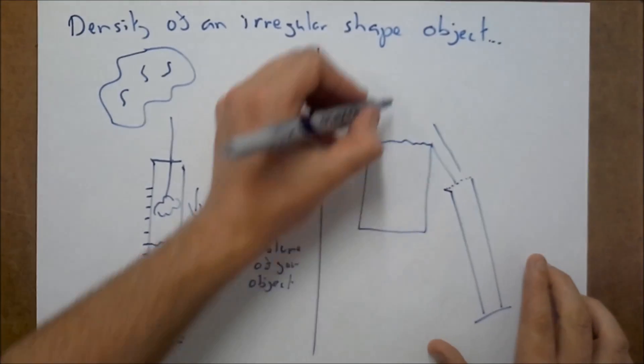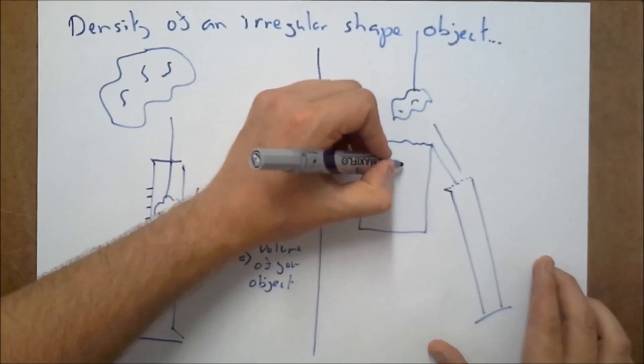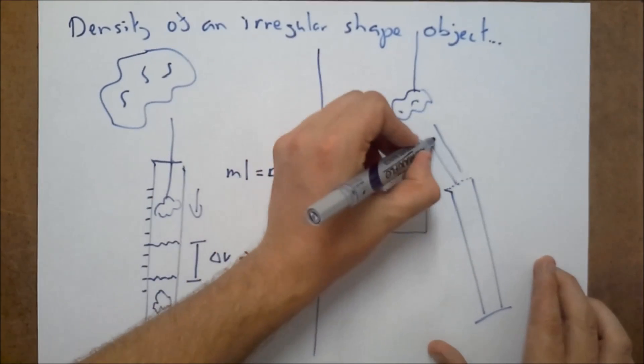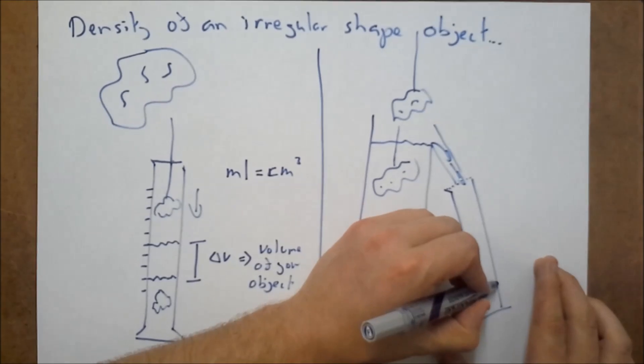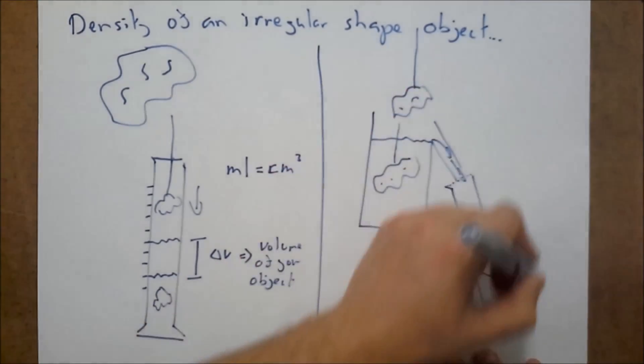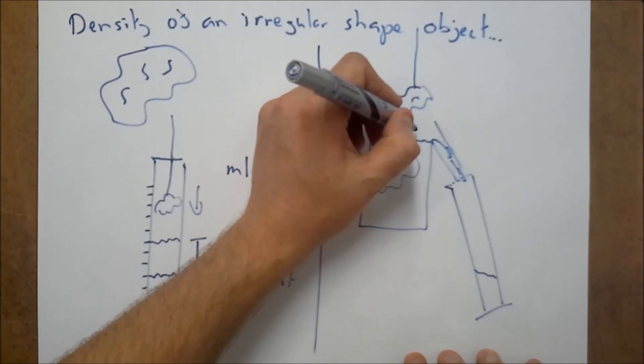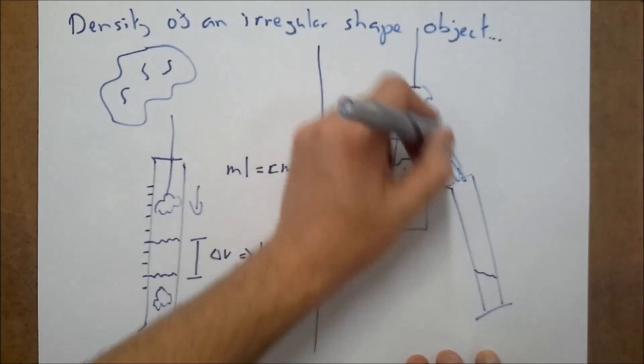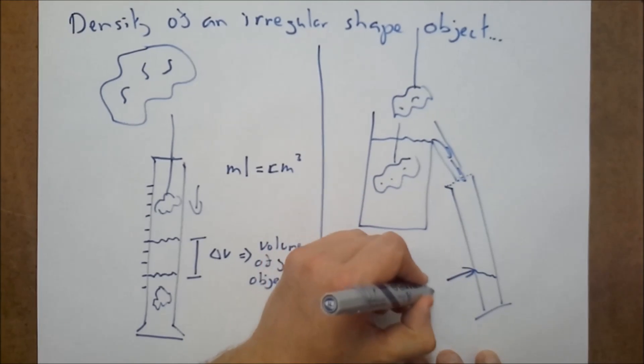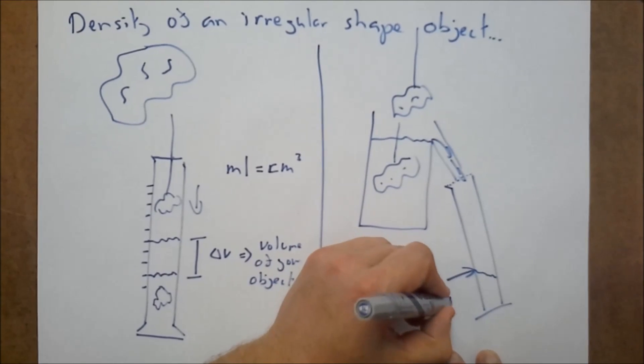And this is empty. And then this is full of water. You get your object again, maybe on a piece of string. And you put it inside the water. Now, what's going to happen is some of that water is going to leave here and fill up your measuring cylinder. Now, all you need to do, once you've filled up the measuring cylinder with the water that's been displaced by the Eureka can, you just read what the measurement says here in milliliters. That's going to tell you your volume in centimeters cubed.